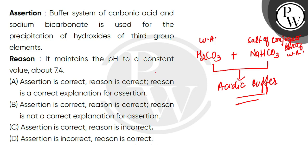When we analyze the cations, the elements in the third group are aluminum, chromium, and ferric. The precipitation is in the form of hydroxides. So, we say that we use a buffer.